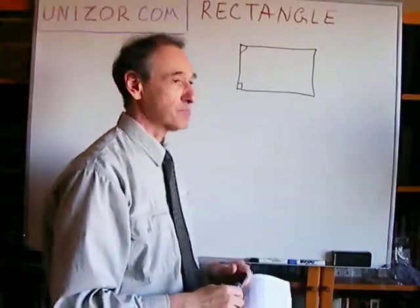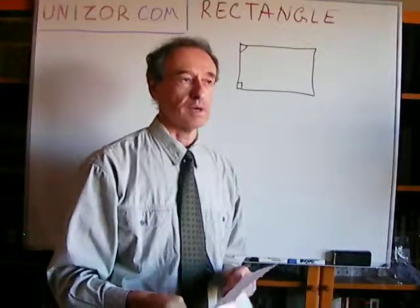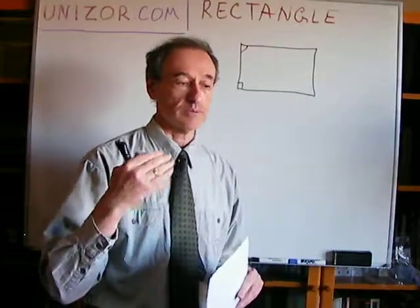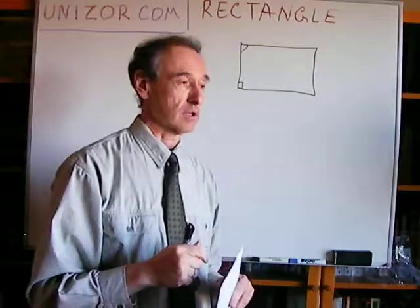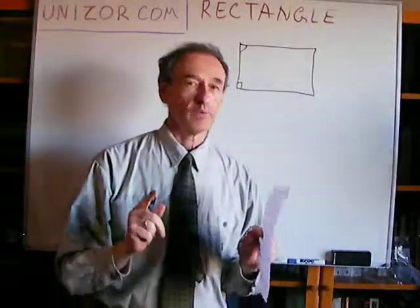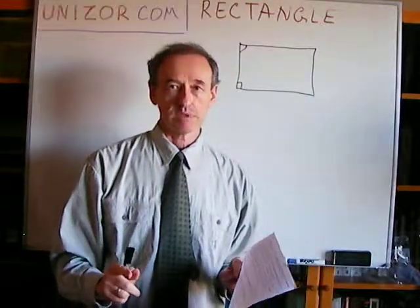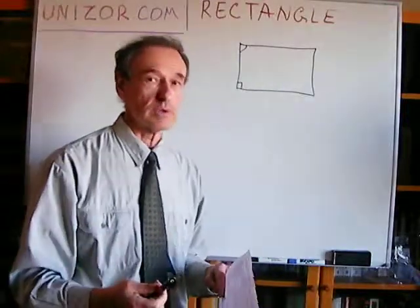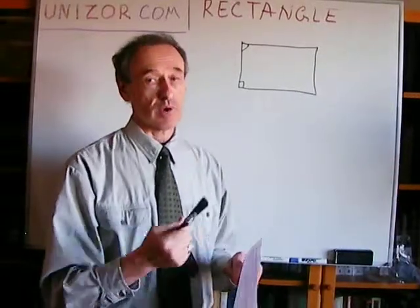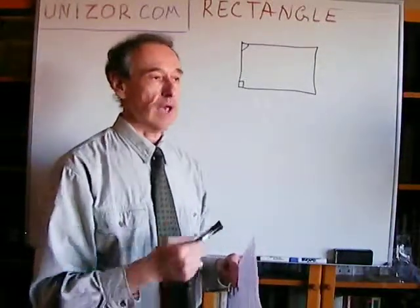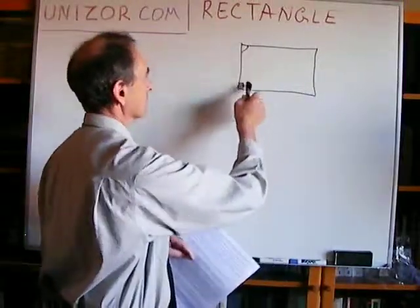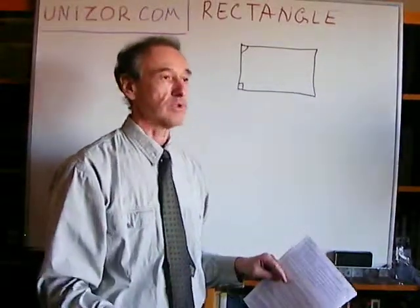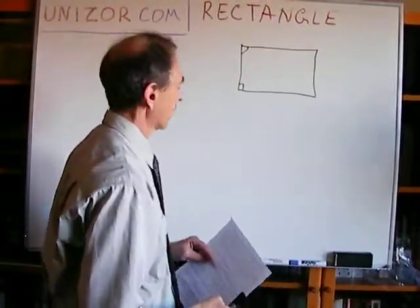So that's basically the immediate property which we can derive from the definition of the rectangle. The definition has only one particular requirement: all angles are supposed to be congruent to each other. But considering we know the properties of the parallelogram, we have basically proven a theorem that all angles of a rectangle are right angles — because these two angles in a parallelogram are supplemental, so 180 degrees divided by two equals 90.